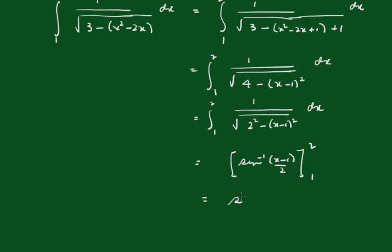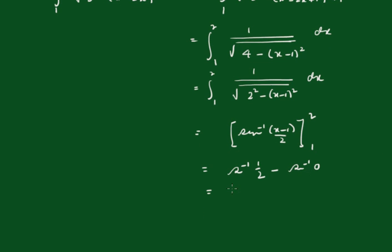So that's the inverse sine of... I'm putting 2 in there. It's going to be the inverse sine of 1 half minus the inverse sine of 0. And the inverse sine of 1 half is pi upon 6. And the inverse sine of 0 is 0. So the answer is pi upon 6.